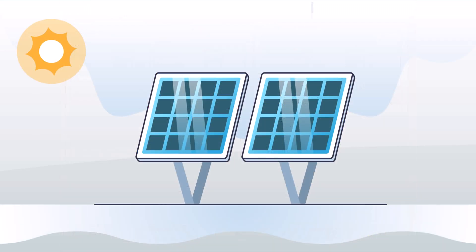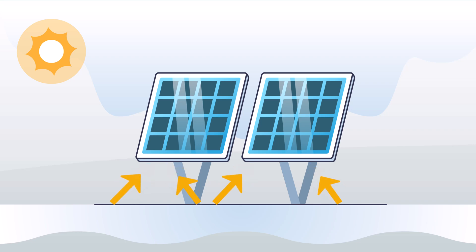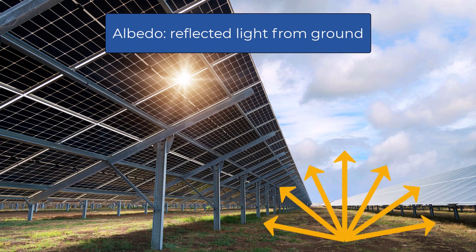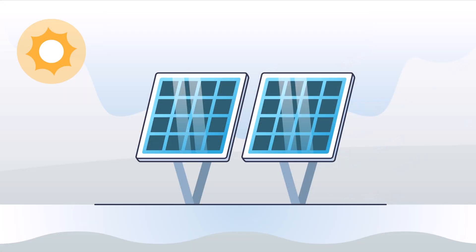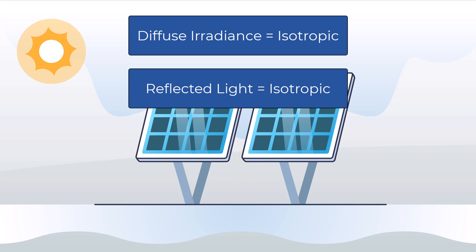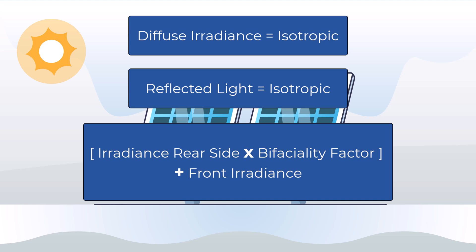In most cases, the usable irradiance at the rear side is mainly the reflection of some parts of the incident light on the ground, which is named albedo. The main hypotheses for the bifacial model in PVSYST are: the diffuse irradiance is isotropic, and the reflected light at each point of the ground is isotropic with a specified albedo factor. The additional irradiance on the rear side is multiplied by the bifaciality factor and then added to the front irradiance for application on the one diode model.